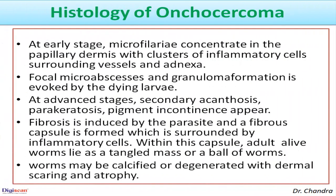Regarding the histology of onchocercoma: at the early stage, microfilariae concentrate in the papillary dermis with clusters of inflammatory cells surrounding vessels and adnexa. Focal micro-abscesses and granuloma formation are evoked by the dying larvae. At advanced stages, secondary acanthosis, parakeratosis, and pigment incontinence appear. Fibrosis is induced by the parasite and a fibrous capsule is formed, surrounded by inflammatory cells. Within this capsule, adult living worms lie as a tangled mass. Worms may be calcified or degenerated with dermal scarring and atrophy.